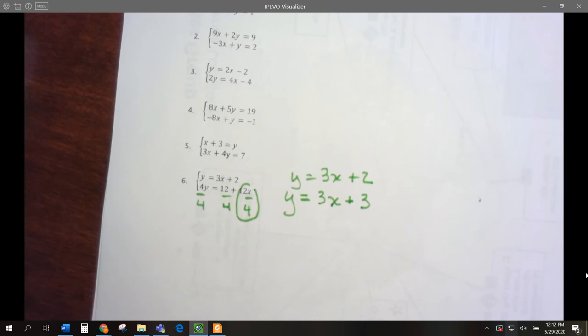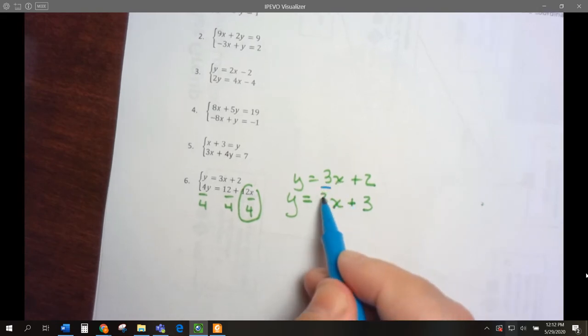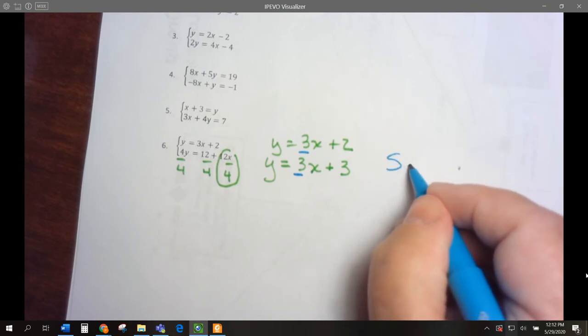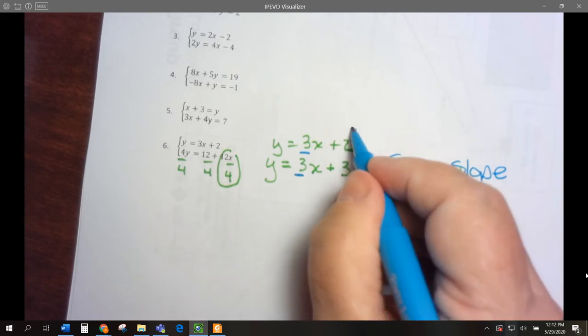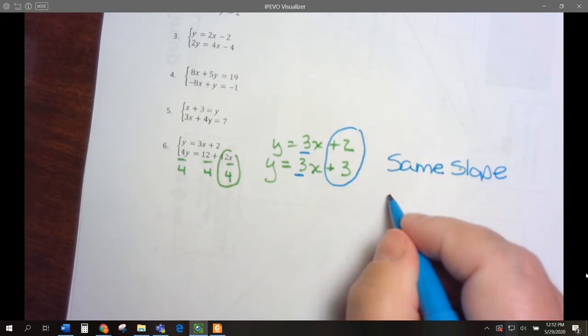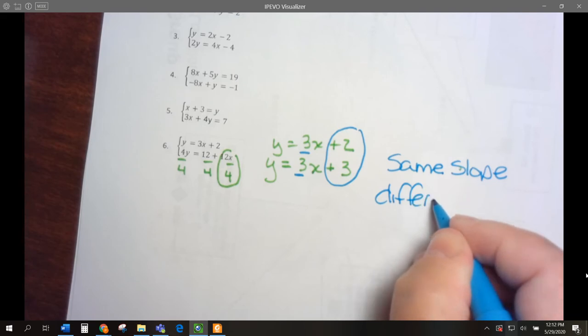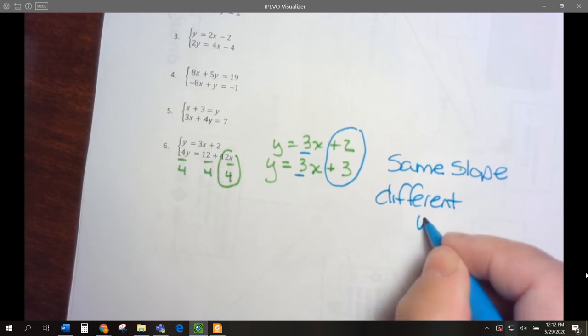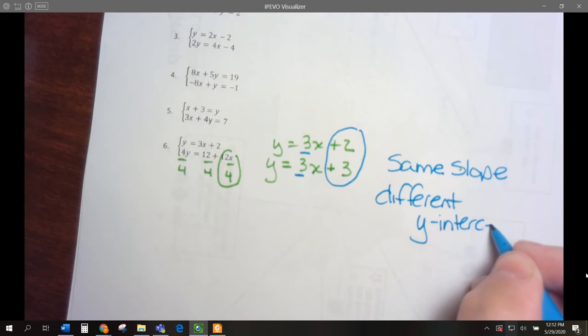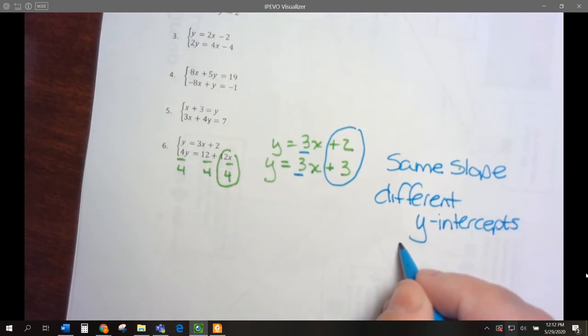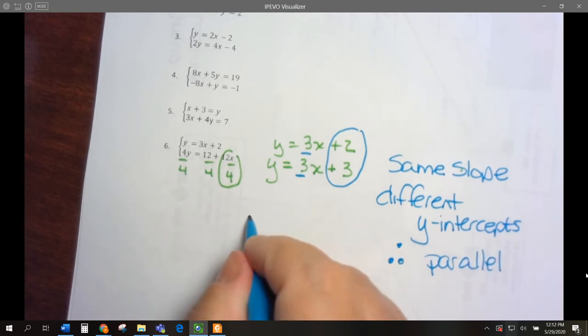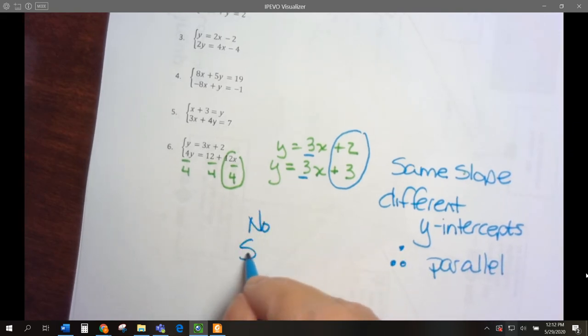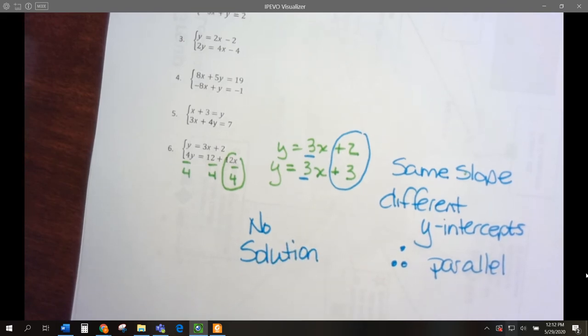If we look at these equations, they have the same slope but different y-intercepts. Therefore, they're parallel. And if you have parallel lines, you'll have no solutions because they're never going to cross. There's never going to be a point that will answer both equations. No solution.